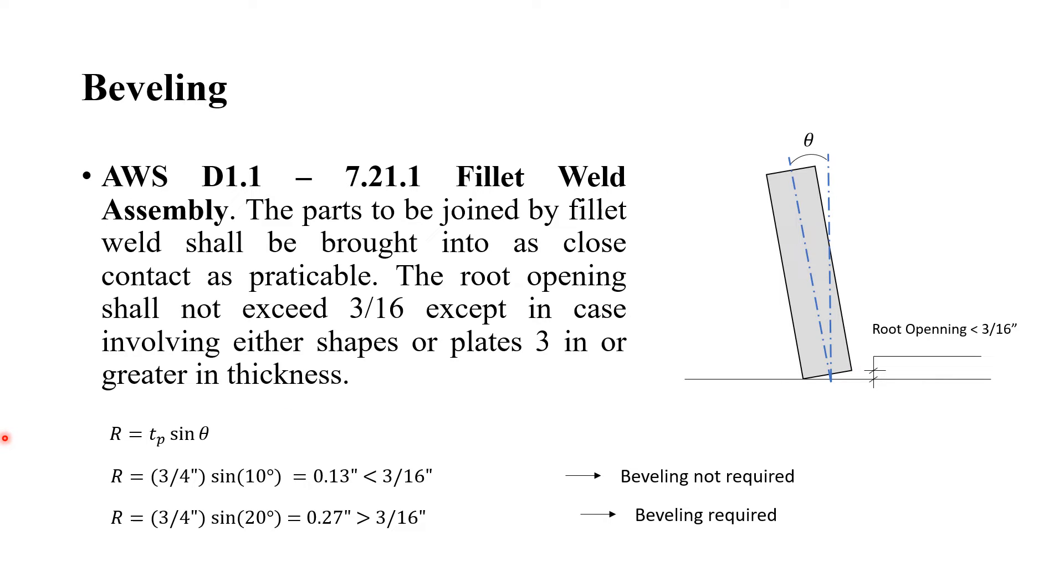If this condition is not met, it is necessary to bevel the plate in order to close the gap. The equation to calculate R is R = tp sin θ. It has the tp, which is the thickness of the plate, and the sine of the skew angle. For example, if you have a 3/4 inch plate with a skew angle of 10 degrees, you're gonna have a 0.13 inch root opening. In this situation, beveling is not required.